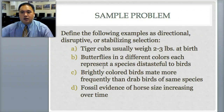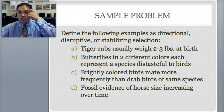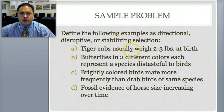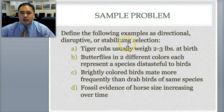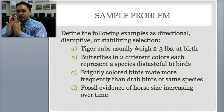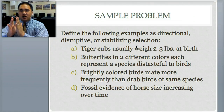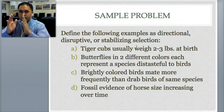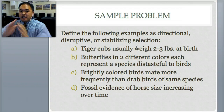Here's a sample problem. Define the following examples as directional, disruptive, or stabilizing. Tiger cubs usually weigh two to three pounds at birth. This is stabilizing — they've all narrowed down into a small window of weights between two and three pounds. They could be one pound or five pounds, but if they're all usually weighing between two and three pounds, that's a stabilizing selection.